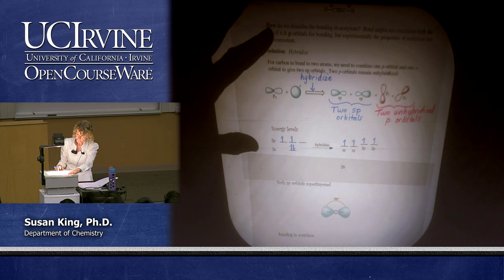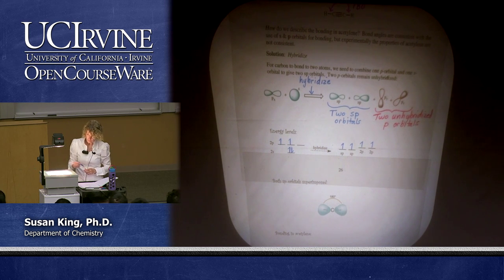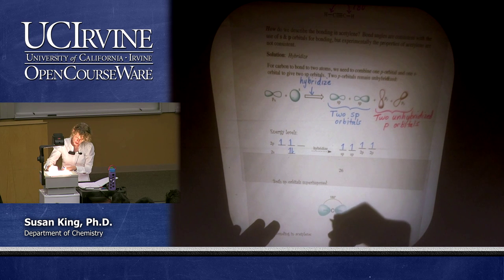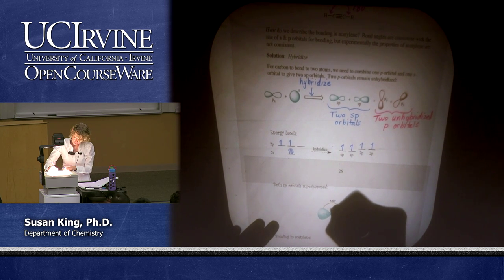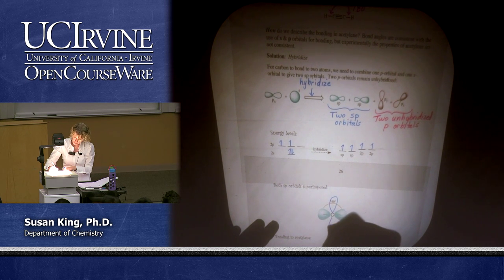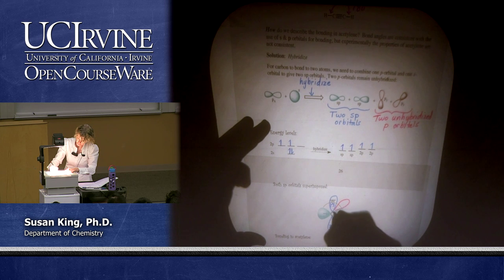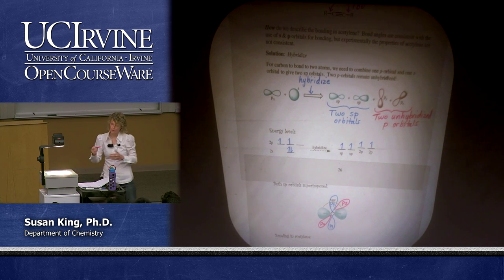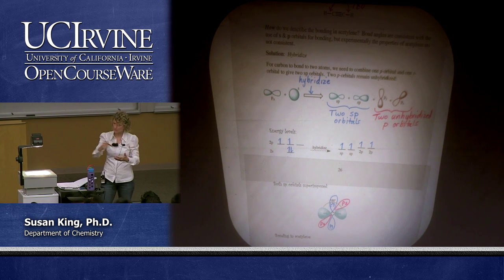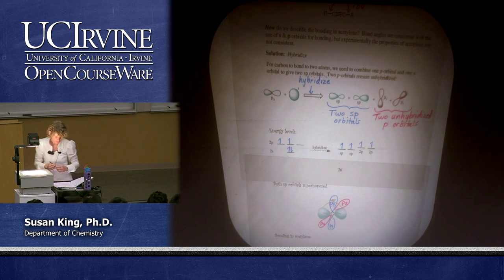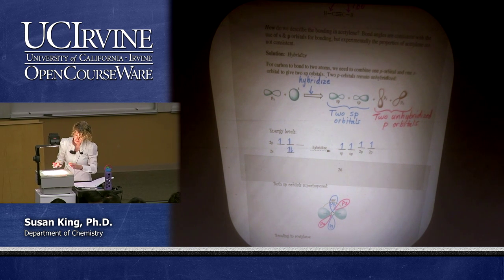Here is my SP carbon with 180 degree bond angles. Let's draw in our PY and PZ. The PY is on the Y axis, and the PZ is on the Z axis — which would really be coming out of your page. So we've got an orbital in each three-dimensional axis: the SP in the X axis, the P in the Y, and a P in the Z axis. That's what SP carbon looks like.